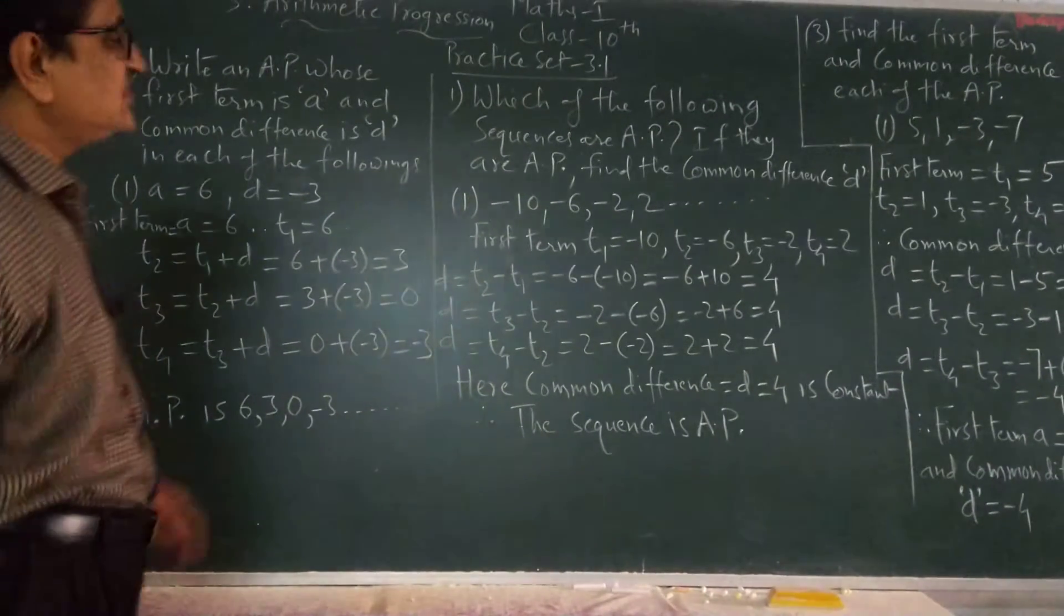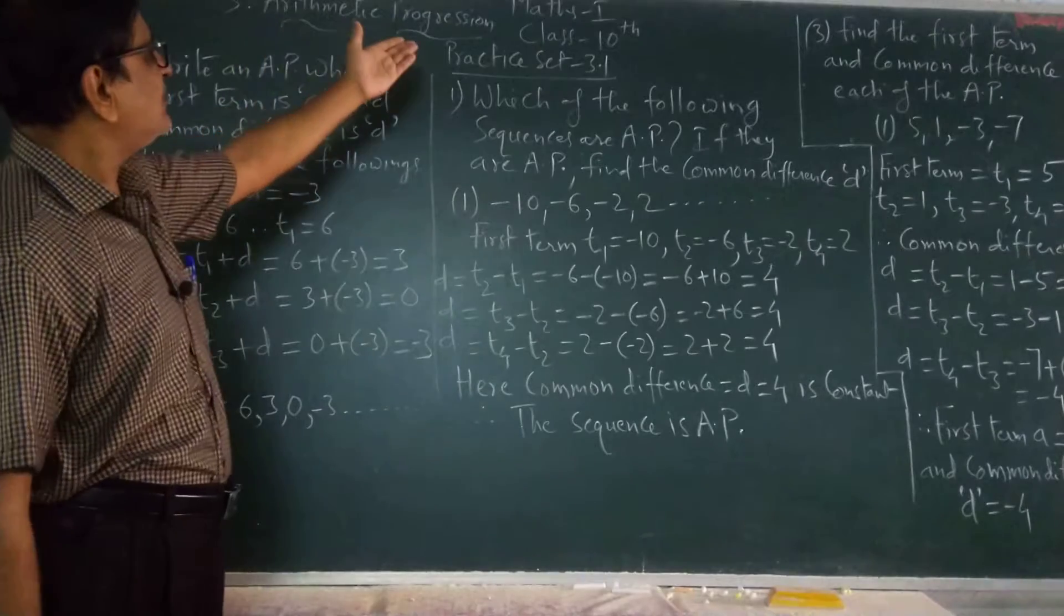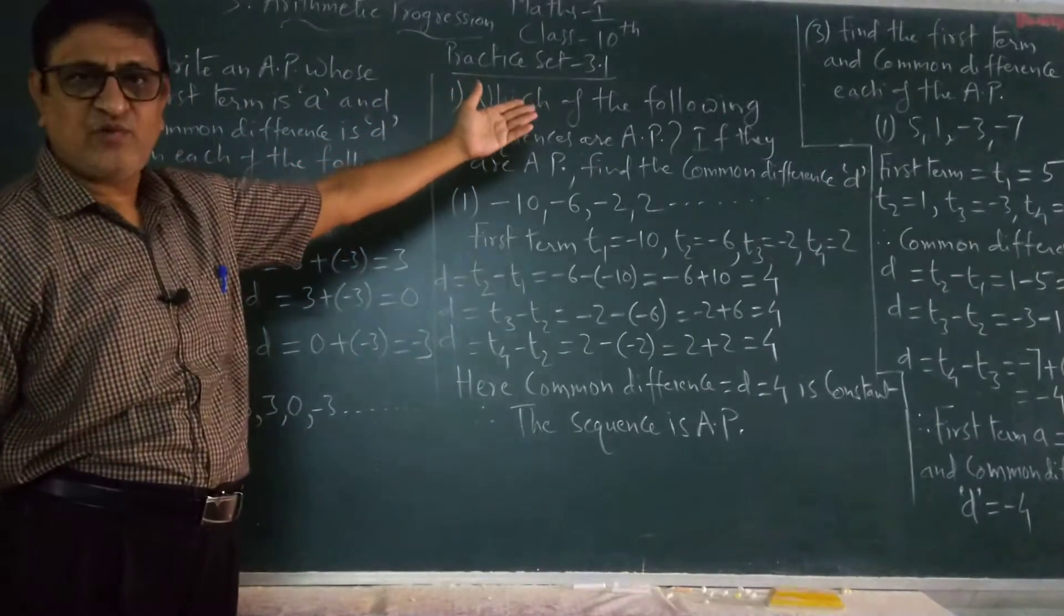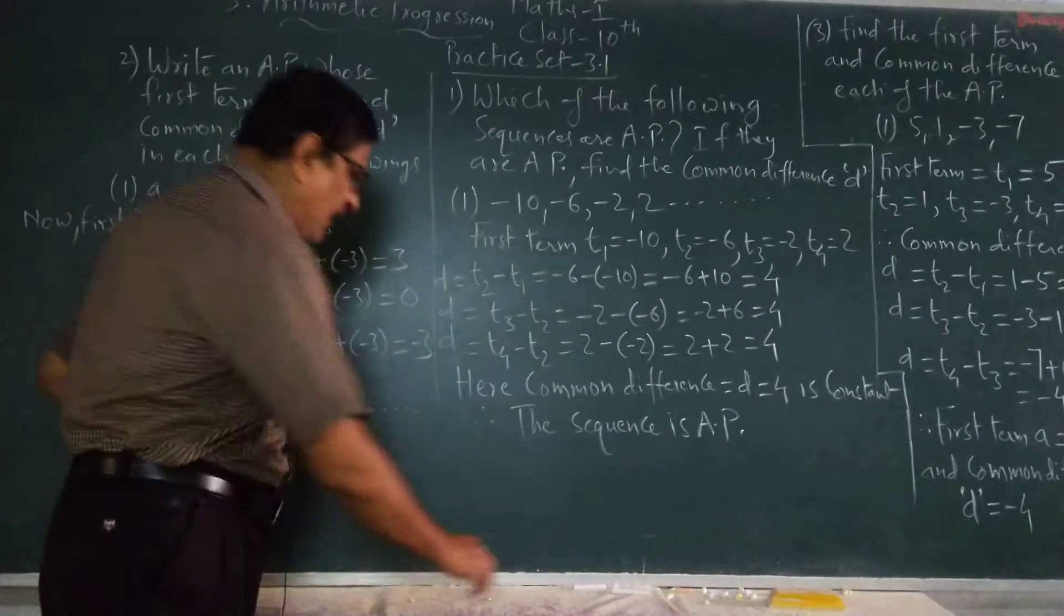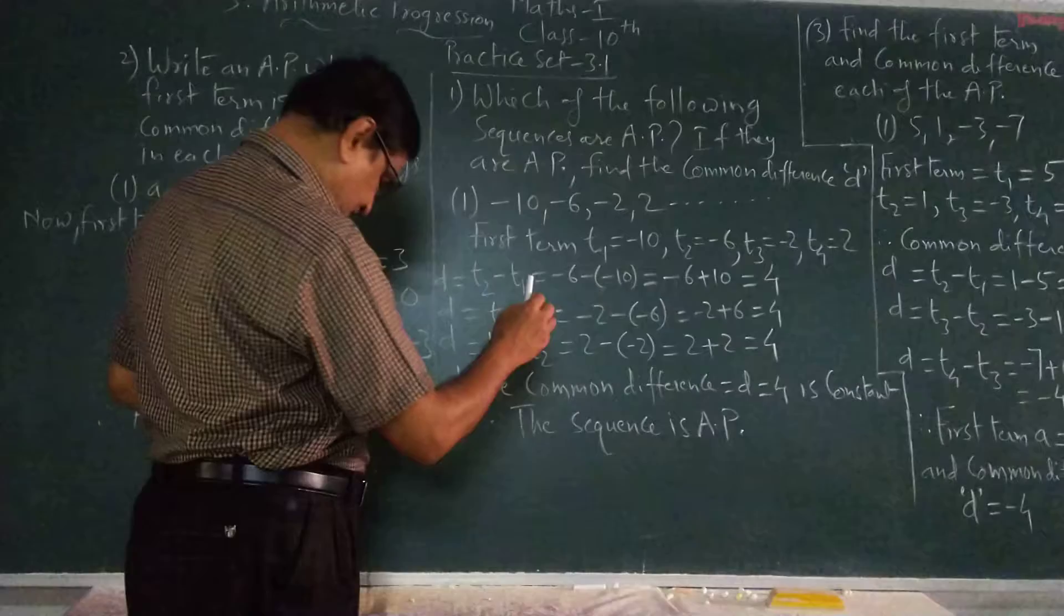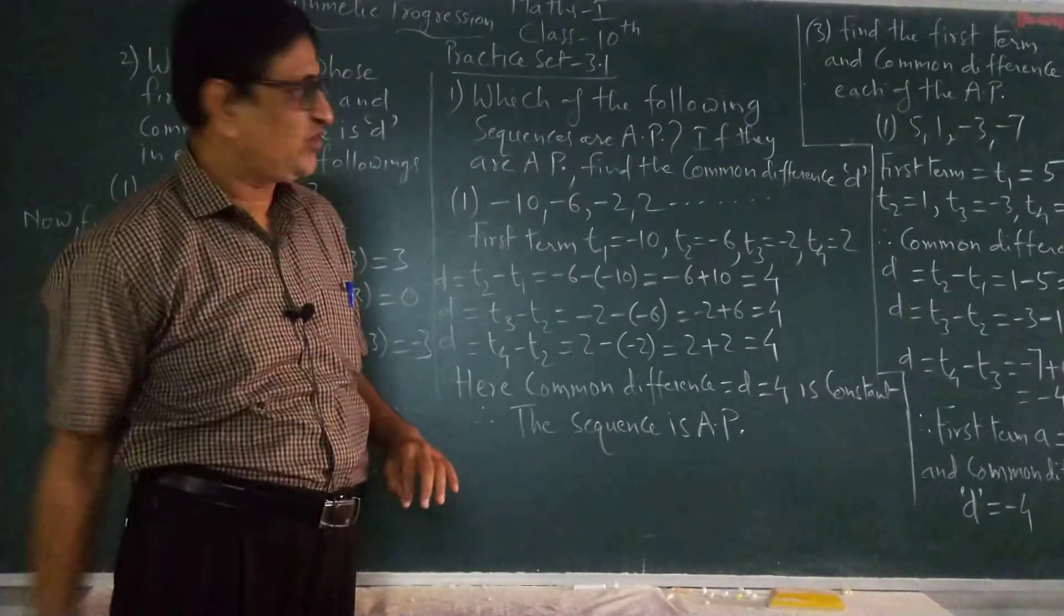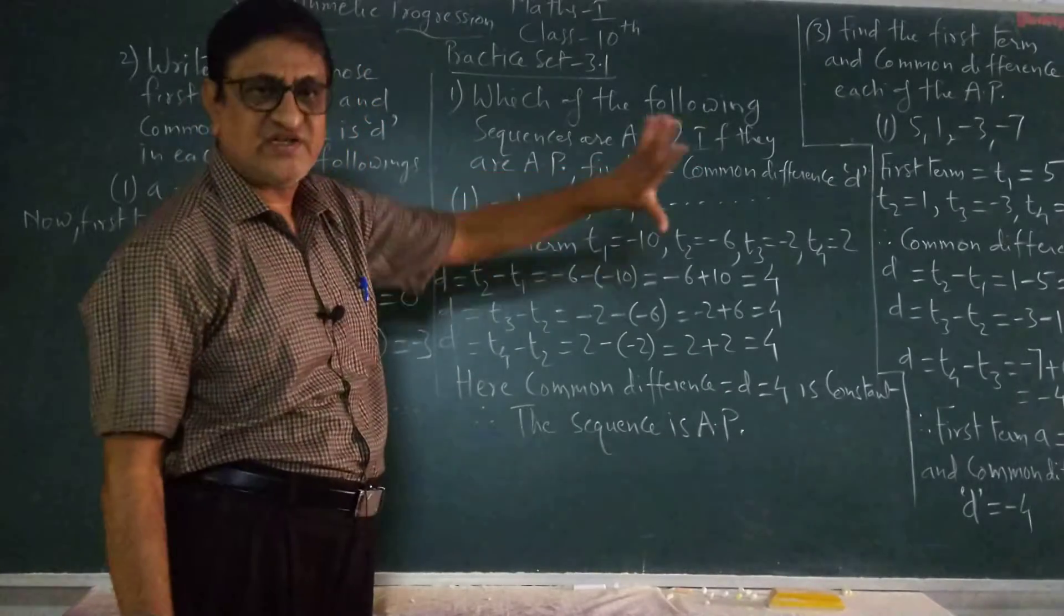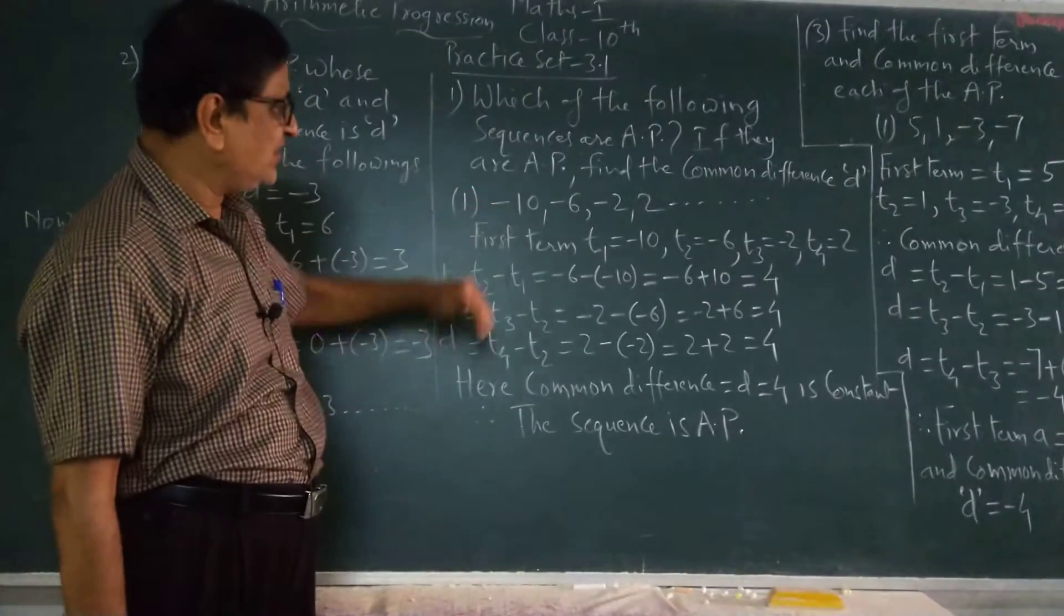Hello students! Today we are going to learn Math 1 class 10 Arithmetic Progression 3rd Chapter Practice Set 3.1. First, which of the following sequence is Arithmetic Progression, and if they are AP, find the common difference D. This is the definition of AP. Now we have problems.